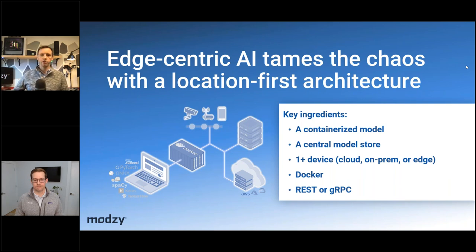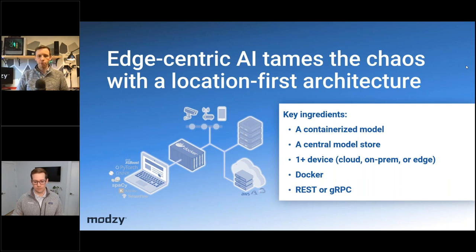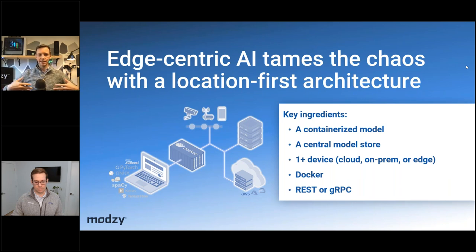The key ingredients start with containers. Containers are one of the best ways to ensure a machine learning model has all its required libraries, scripts, data files, and assets bundled together in an immutable format — if the container works, it will keep working because dependencies are locked inside. This provides flexibility to run models across a range of different devices. You also need a central model store to host containers and allow edge devices, when able, to reach out and pull those container images.